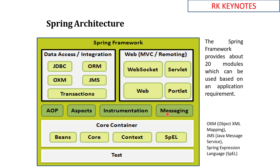The four main core containers are Beans, Core, Context, and SpEL — Spring Expression Language. The Beans module takes care of object creation; the Bean Factory contains all the beans. The Core module takes care of the most important things like Dependency Injection and Inversion of Control. Context refers to global information that can be kept in the application and accessed from anywhere within it.